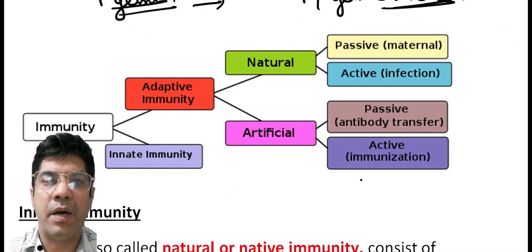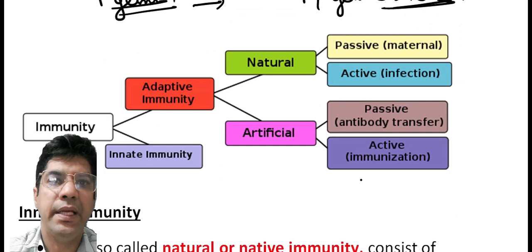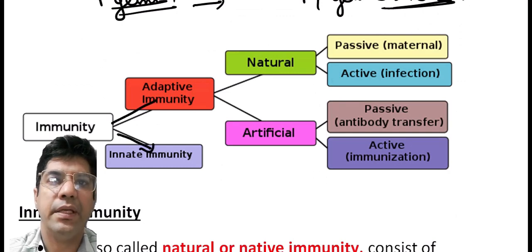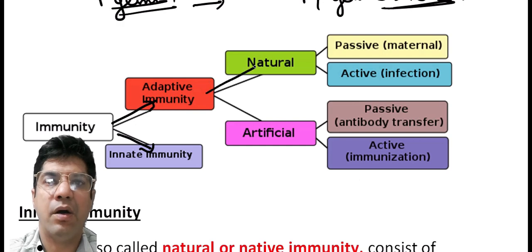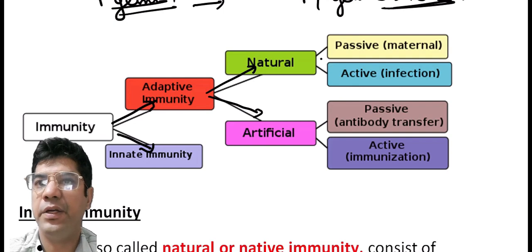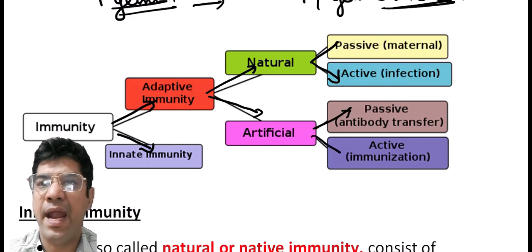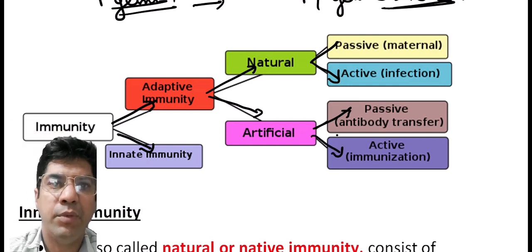Now let us discuss immunity and types of immunity. Immunity can be innate immunity or adaptive immunity. Adaptive immunity can be natural or artificial. Natural can be subdivided into active and passive, whereas artificial adaptive immunity can also be divided into active and passive immunity. Innate immunity serves as the body's primary defense against infection, offering immediate first defense.